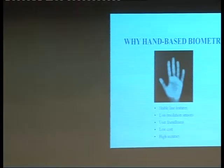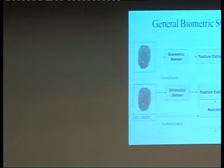Looking at a general biometric system, what exactly happens? You first do the enrollment, wherein you give your biometric to the sensor. Certain features are extracted — not the entire image is taken as a biometric, but certain features are extracted from the biometric, and it is stored in the database.